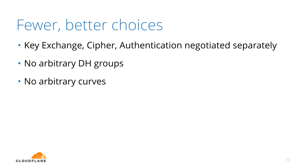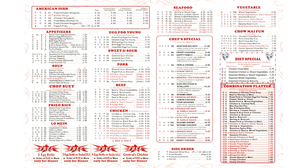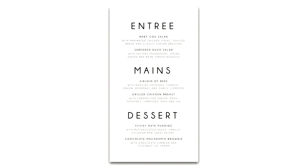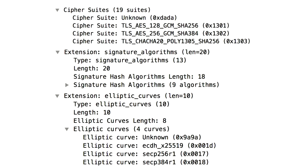TLS 1.3 also means fewer, better choices. In cryptography, better choices always means fewer choices. There's now a short list of curves and finite field groups — no arbitrary Diffie-Hellman groups made up by the server, no arbitrary curves. This shortening really enables one-RTT to work most of the time, because the client's prediction of which key establishment method the server supports is correct a much larger percentage of the time. Configuring your TLS server no longer looks like a complicated takeout menu.